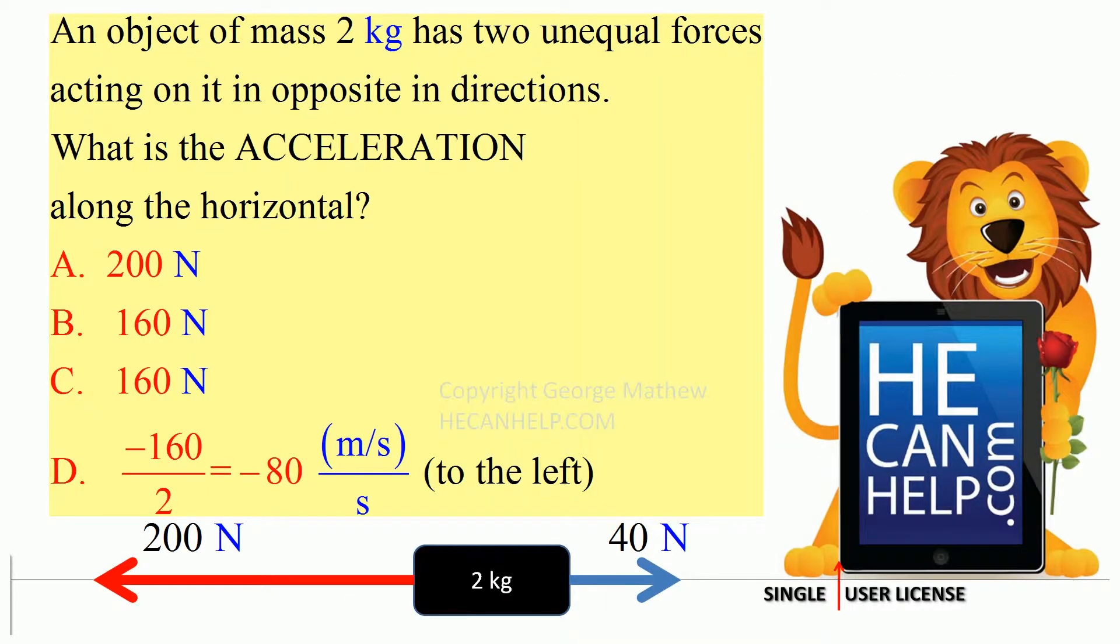An object of mass 2 kg has two unequal forces acting on it in opposite directions. What is the acceleration along the horizontal?